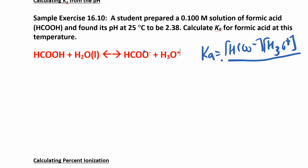There is our Ka expression and that's what we're trying to find. Sometimes they give you K and you solve for equilibrium concentrations; sometimes they give you equilibrium and you solve for K. In this problem, they give us the initial concentration, and then they give us the pH, which we can use to find the equilibrium concentration of hydronium.